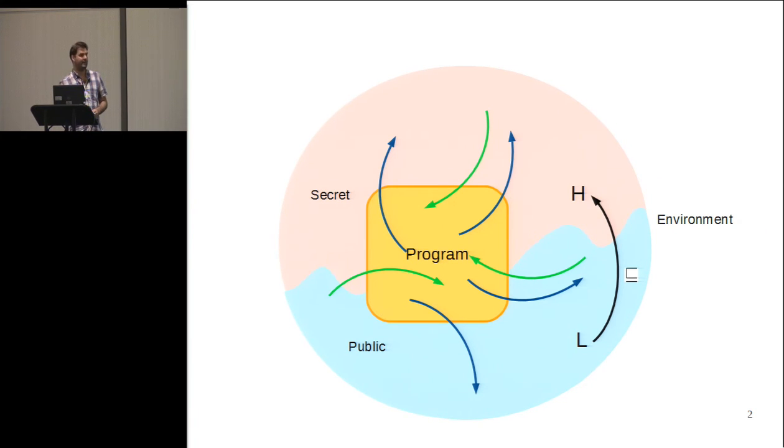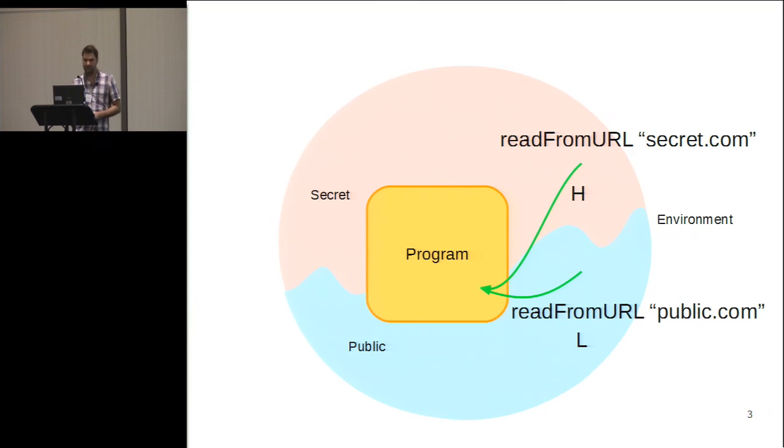So, why would we want to do things dynamically? Consider this function, read from URL, which takes a string representing some URL, and then reads a value from that server. It might be the case that this function ends up reading from different servers, depending on this string. The program can't know at compile time what this server is going to be, and therefore we can't know for sure what kind of label we're going to have. Sometimes we don't know what part of the environment we're reading from, not statically at least. And this is where we might want to do things dynamically.